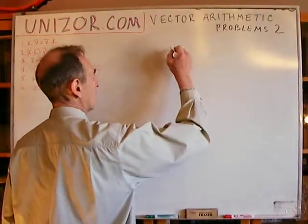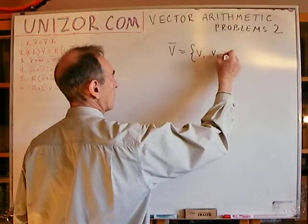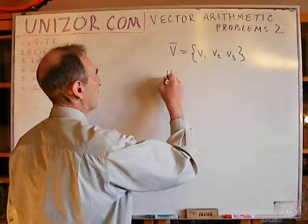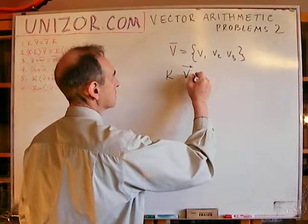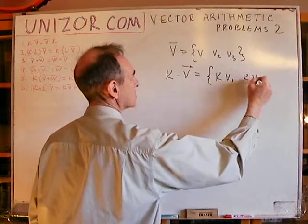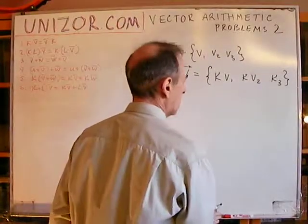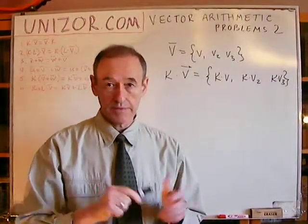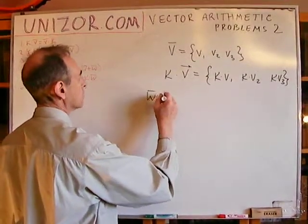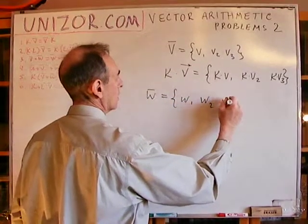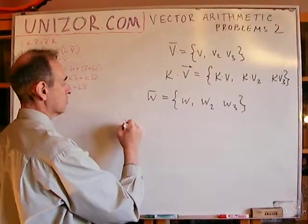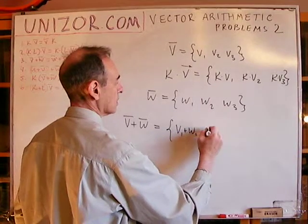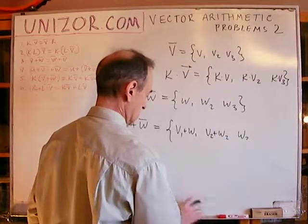If we have a vector with a tuple representation — this is a three-dimensional vector, but it's exactly the same as two-dimensional — then multiplication of this vector by a constant can be expressed in tuple representation as multiplication of each coordinate by the same constant. That's one thing from the previous lecture. The second one, about addition: if you have another vector in tuple representation, then addition of these two vectors has a tuple representation where you add corresponding coordinates to obtain the coordinates of the result.